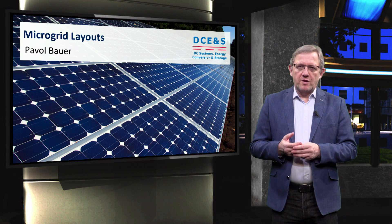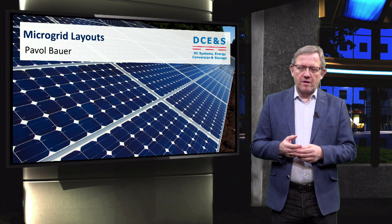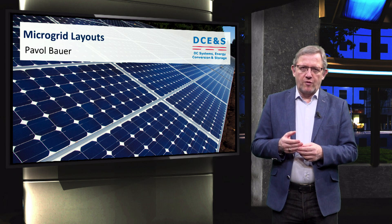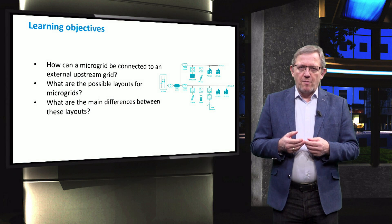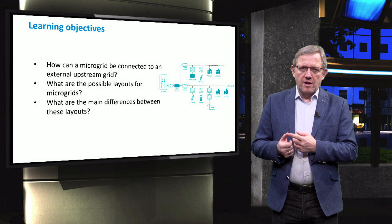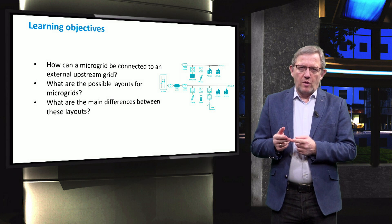Ladies and gentlemen, in the previous video we addressed how optimally wind and photovoltaic solar can be sized within a microgrid. During this video we address how these different components can be connected together to form a microgrid. The main learning objectives will fall under three main questions: firstly, how can a microgrid be connected to an external upstream grid? Secondly, what are the possible layouts for microgrids? And thirdly, what are the main differences between these layouts?